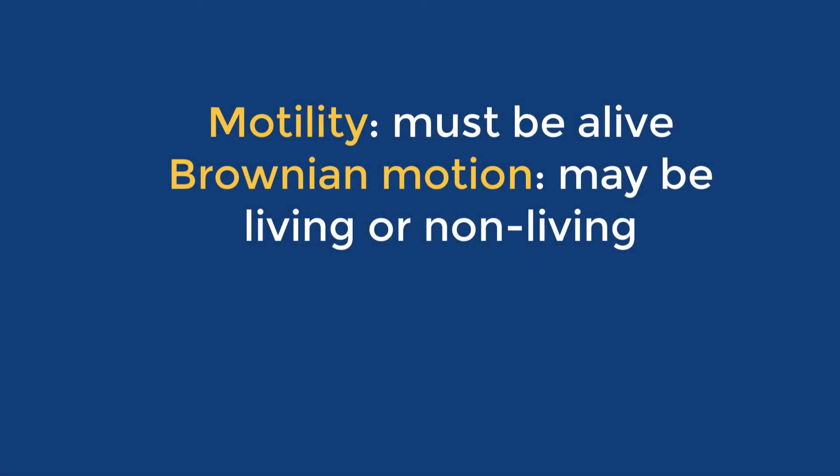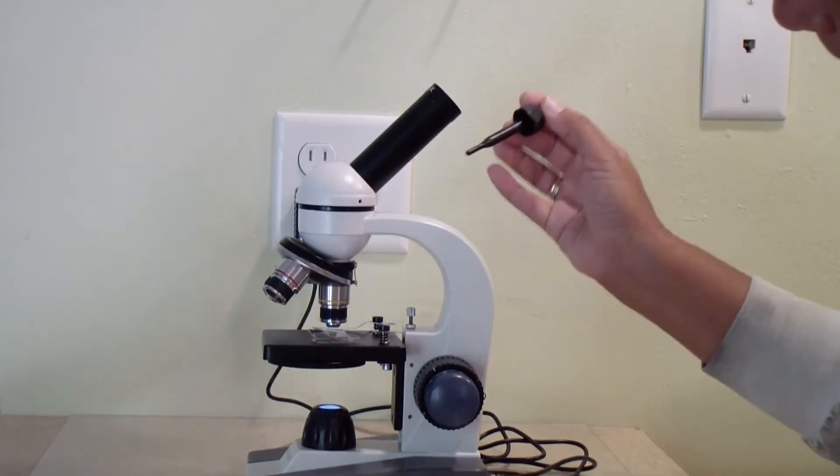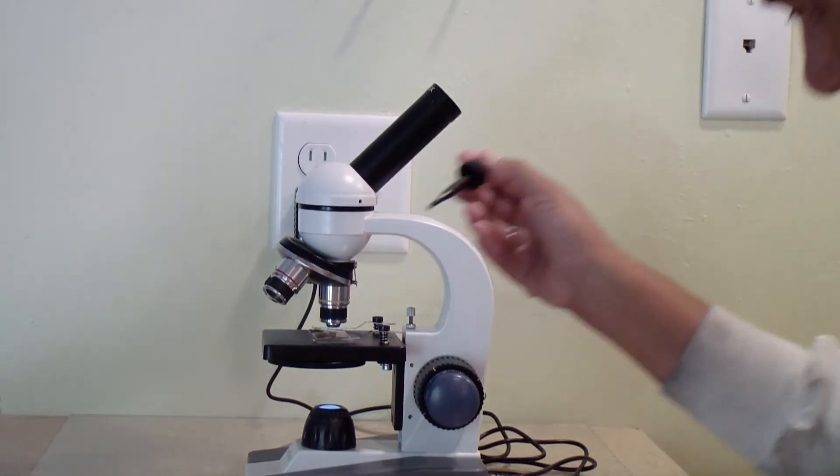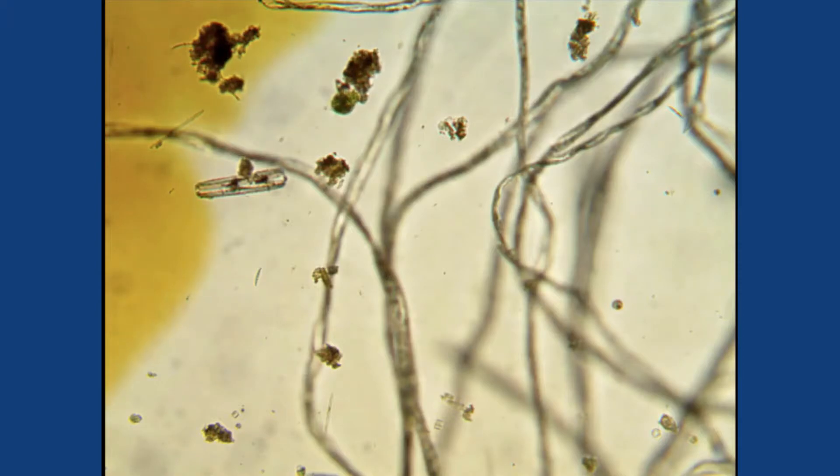There is a way to find out. True motility can only be performed by living organisms. If you see something moving, you may add a drop of iodine right along the edge of the coverslip.